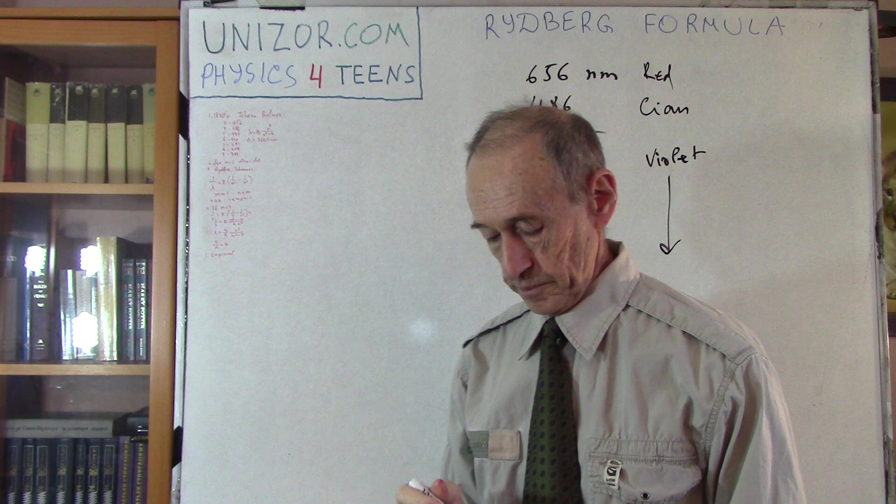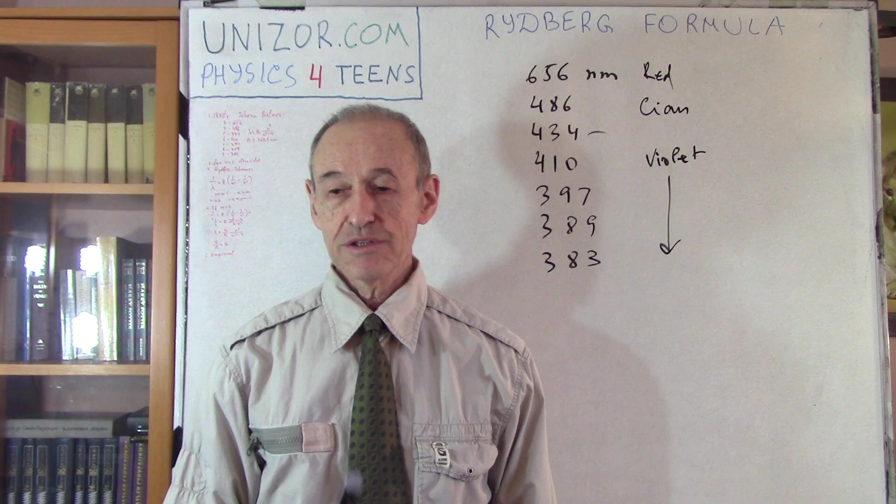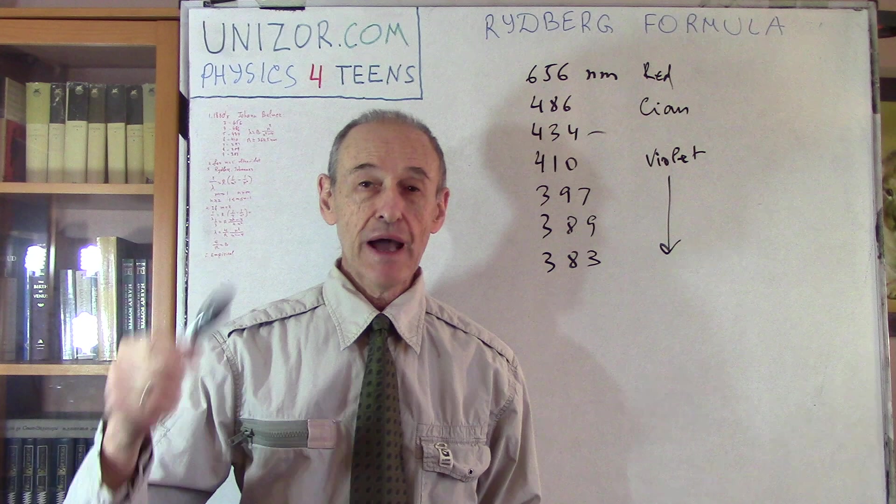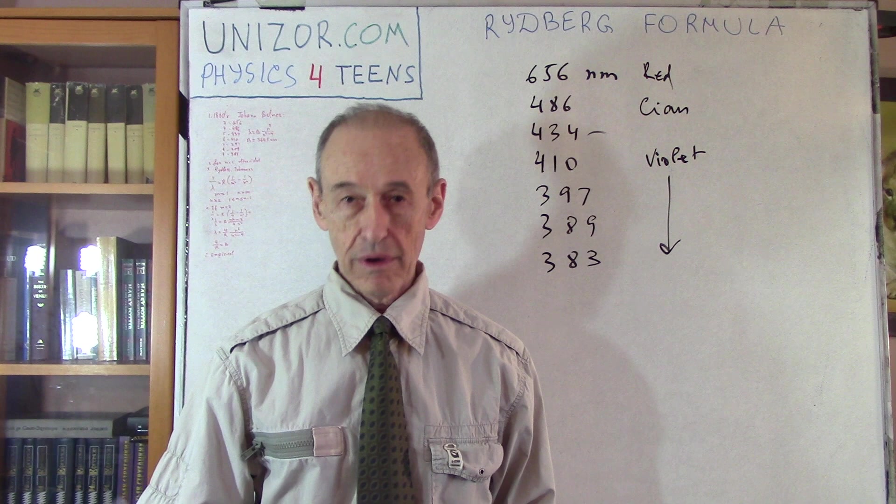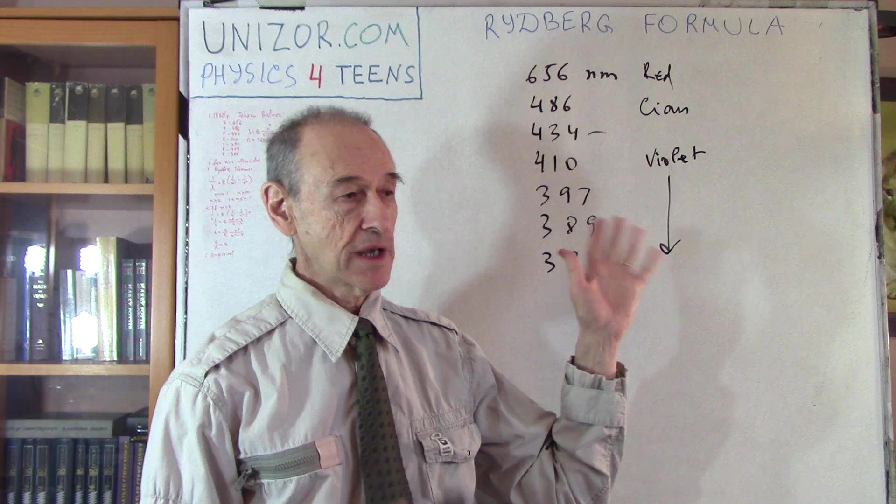Now, experiment is one thing. But the theory, the real physical theory is another. What was the first step when you have certain number of numbers, which you don't know why they are this particular way? The theory actually came up much later. That was at the time of Bohr atom's model, which will be the subject of the next lecture. And that's the 20th century, beginning of 20th century. But at that time, 1880 something, people just had these numbers.